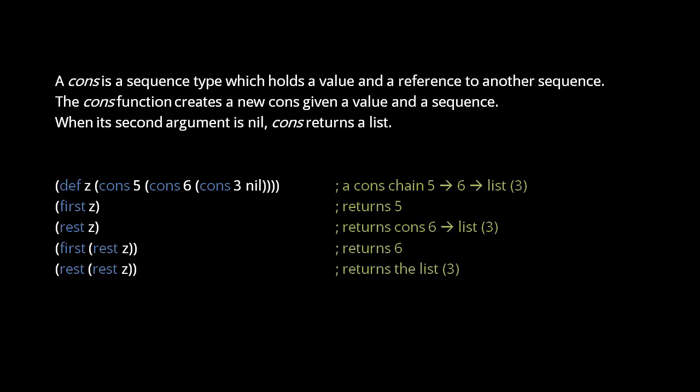This is very similar to the chain of nodes that make up a persistent list, but the difference is that list nodes may only link to other list nodes, not sequences. In a chain of conses, the last cons might reference some other kind of sequence, such as a list.